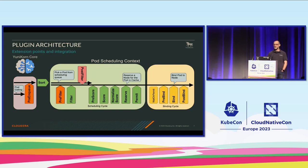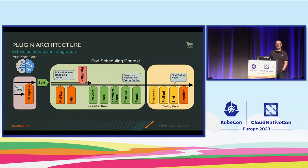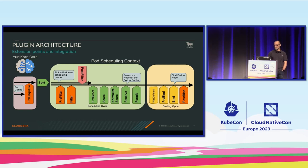The second extension point we implement is the pre-filter. The pre-filter runs over all nodes and decides which nodes to use and which not to use. In combination with the filter hook, this allows us to select the nodes that the Yunikorn core has decided on. The last point we implement is the post-bind — the final point in the cycle. When post-bind returns, we know the pod is scheduled, completely accepted by the kubelet, and being started. It's a housekeeping point for us.